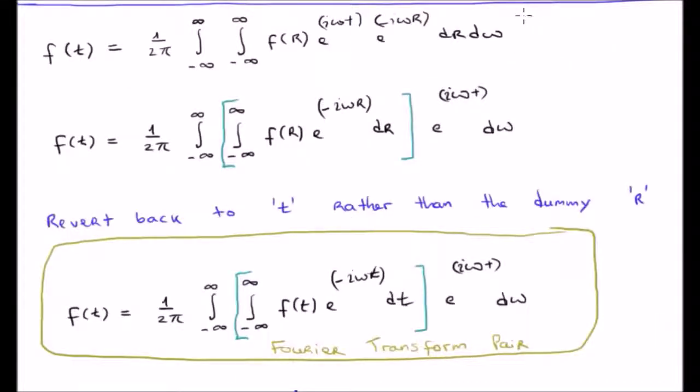So we rewrite our complex Fourier integral as follows and simply rearrange it. Note that I've bracketed off the integral with respect to R. What's important to note is in the exponential, e to the i omega t is not a function of R and as a result can come outside of the integral.